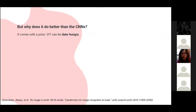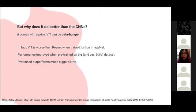So now, but still, why does it do better than the CNNs? Actually, VIT, the increased representation capacity of the VIT comes with a price. So VIT can be data-hungry. So actually, the experiments involved in this paper involved training a larger amount of data than what is necessary for a standard CNNs. In fact, VIT is worse than ResNet when trained just on ImageNet. So, but their performance improved when pre-trained on big data set. So big is because they have, according to the paper, they have used JFT-300, which contains 300 million weakly labeled images. So when they did that, when they did the pre-training, the models have outperformed much bigger na CNNs.